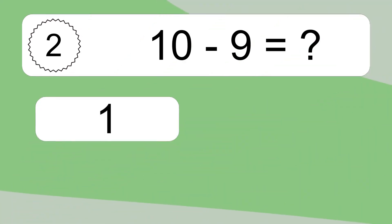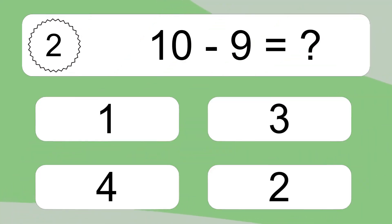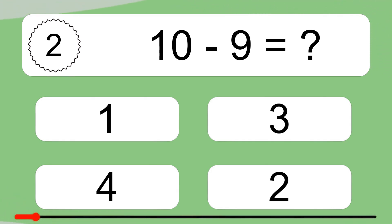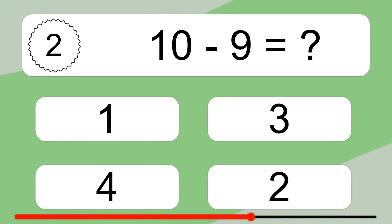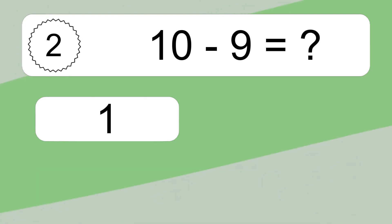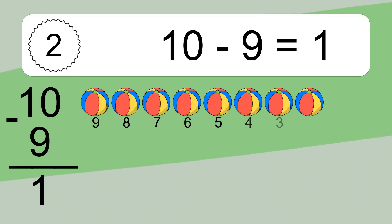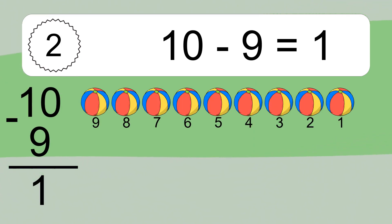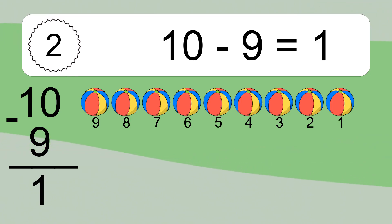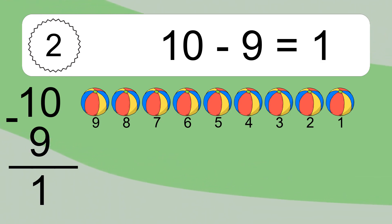10 minus 9 equals what? 10 minus 9 equals 1. Let's count it! 9, 8, 7, 6, 5, 4, 3, 2, 1.